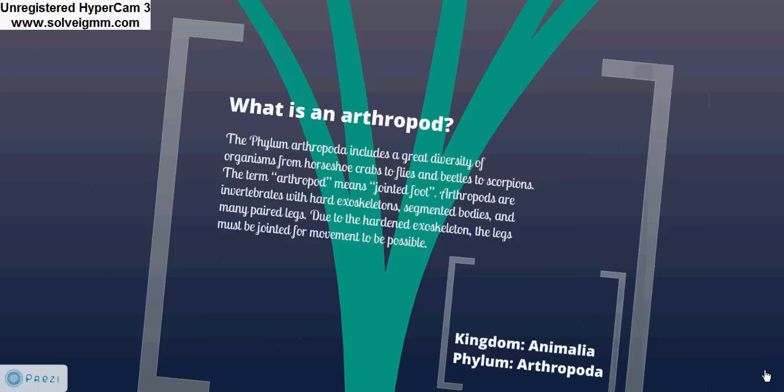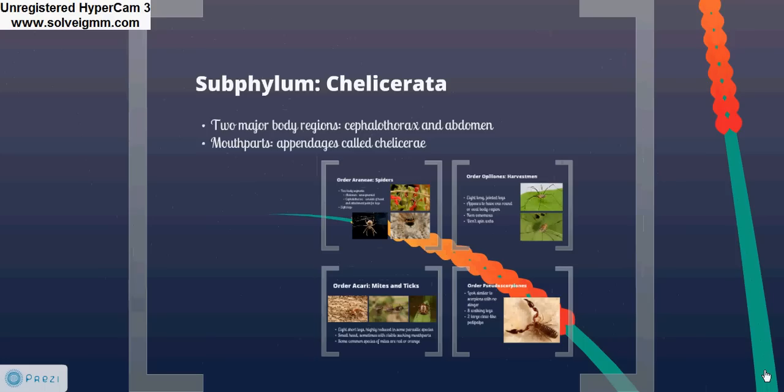First, let's consider the subphylum Chelicerata. Chelicerates are distinguished by having two major body regions: the cephalothorax and the abdomen. The cephalothorax has structures for both sensory functions and locomotion — eyes, mouthparts, and legs. These mouthparts are another defining feature; all of these organisms have mouthparts called cheliceri.